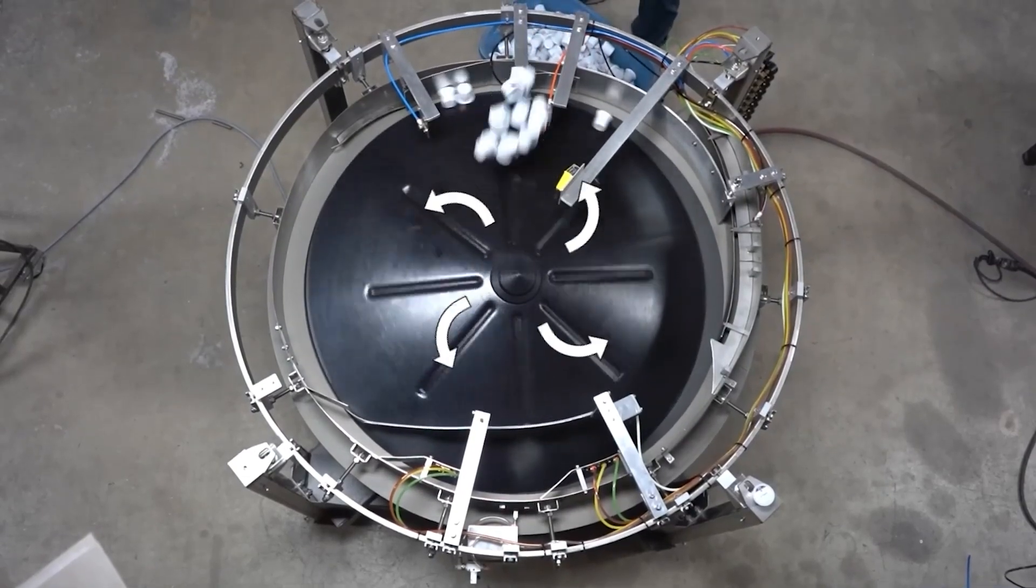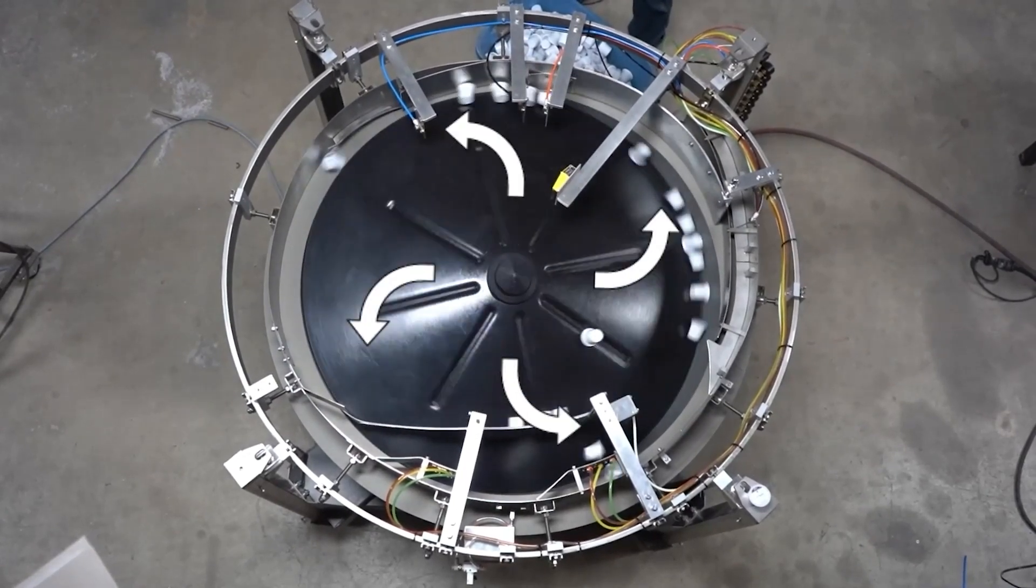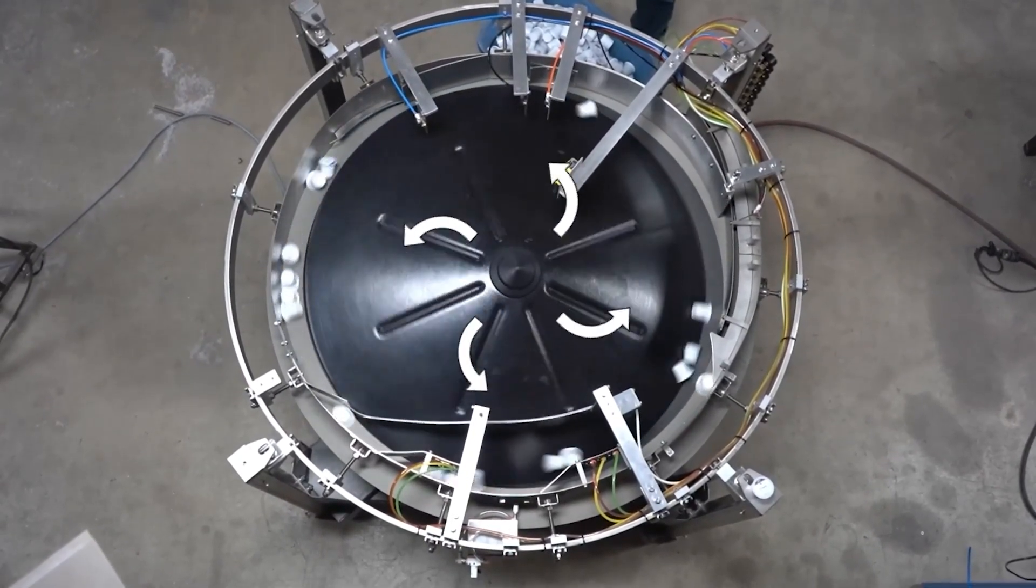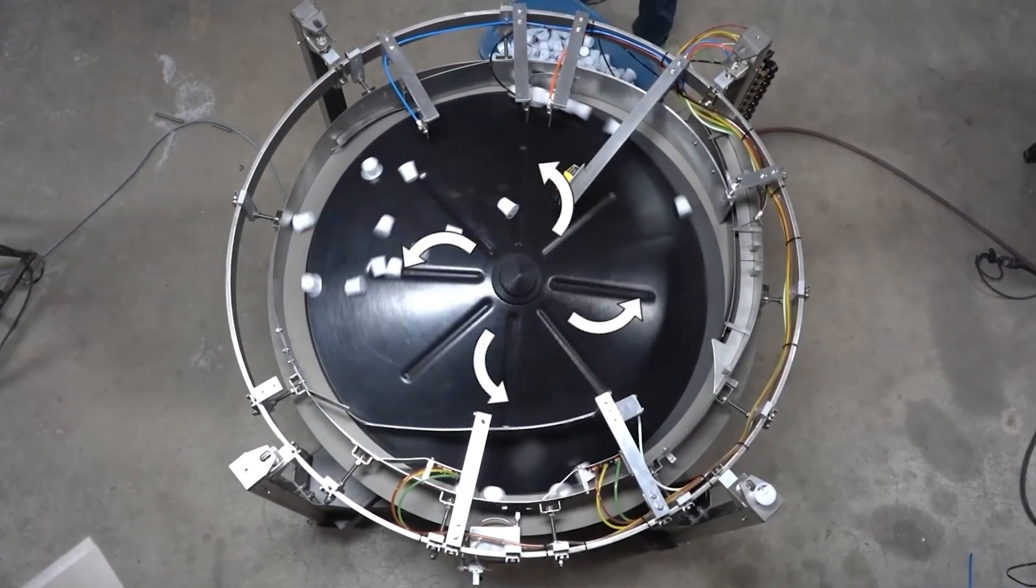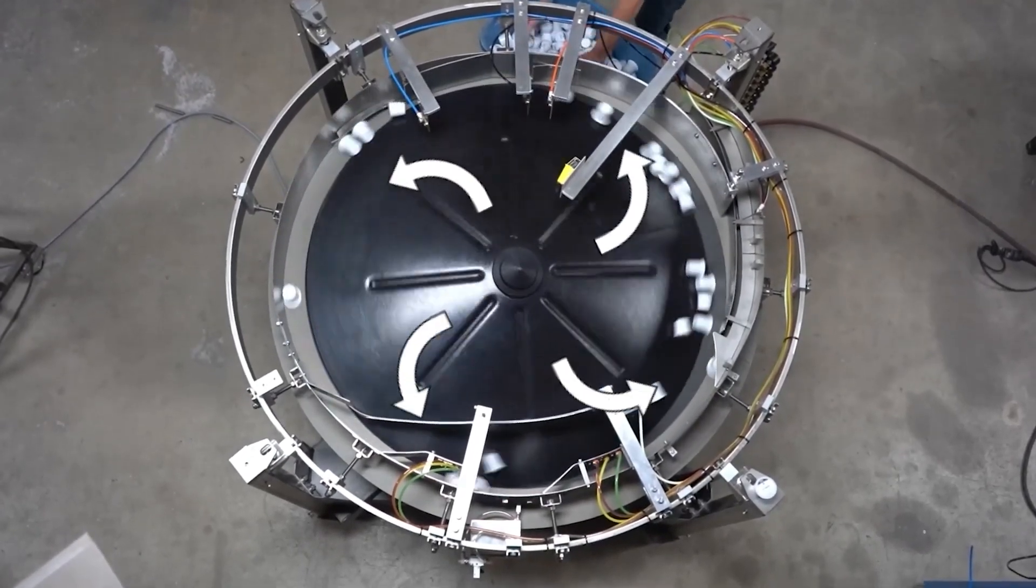Centrifugal feeders work by first loading the parts into the center of the bowl onto the central disc. The central disc spins causing centrifugal force to push the parts towards the outer edge or running surface.